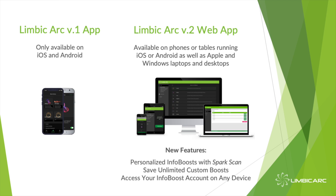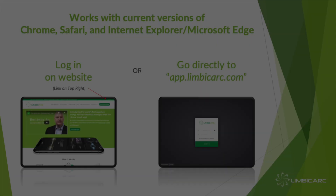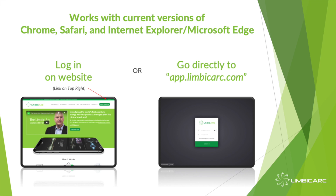To log into the new V2 app, you use the same username and password from your V1 app — that was just ported over. You can log in from any device: iPhone, Android, tablet, PC, or Mac. It's platform agnostic — all you need is internet access. To log in, go to limbiciarc.com or more directly, app.limbiciarc.com. Both will get you to the same place, and you'll see your full account and all your boosts.